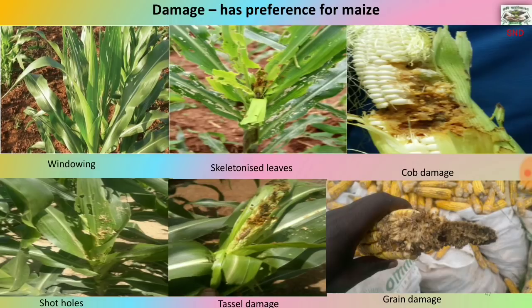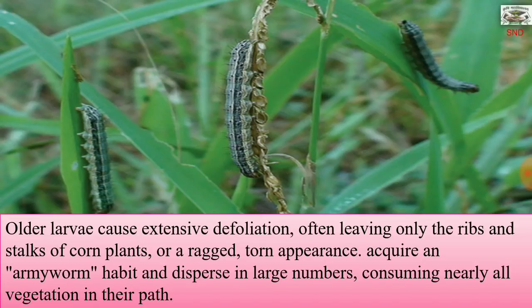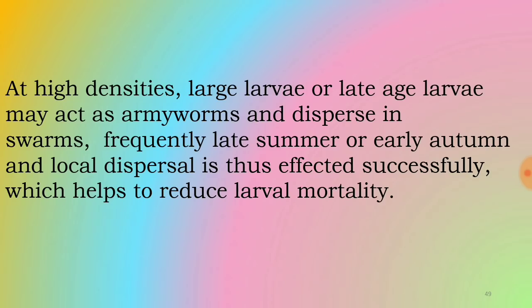The damage done to the maize crop includes symptoms such as windowing, skeletonized leaves, completely damaged cobs, shot holes in the leaves, and damage to the tassels. Older larvae cause extensive defoliation, often leaving only the ribs and stalks of corn plants with a ragged, torn appearance. At high densities, large late-age larvae may acquire armyworm habit and disperse in large numbers, consuming nearly all vegetation in their path, and local dispersal is thus affected, helping to reduce larval mortality.